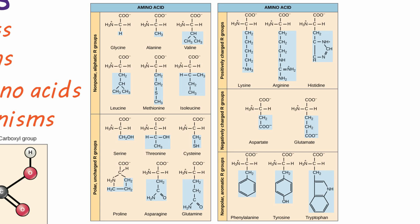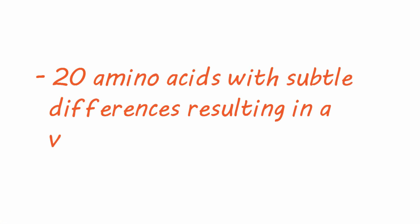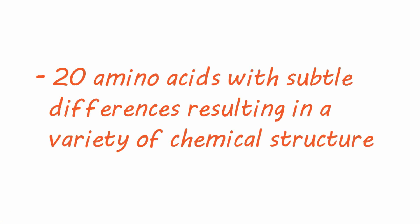The resulting amino acid may be polar, non-polar, negatively charged, positively charged, or aromatic. If that all just went way over your head, that's okay for this video. Just know that there are 20 amino acids with subtle differences, resulting in a variety of chemical structures.